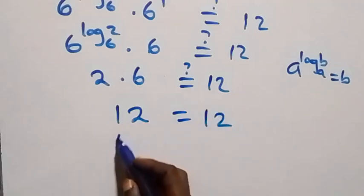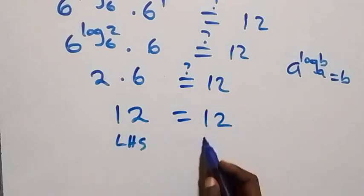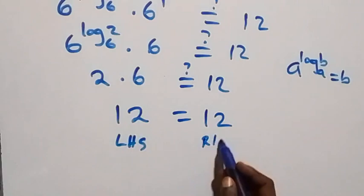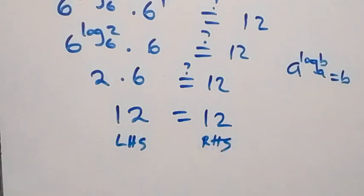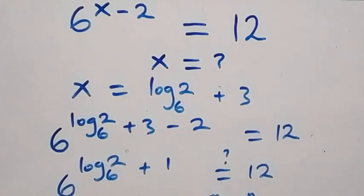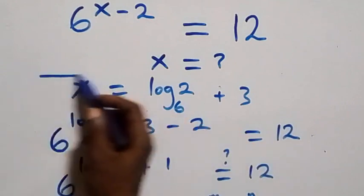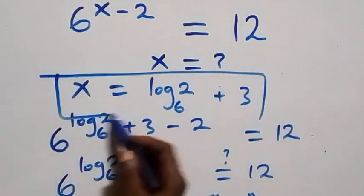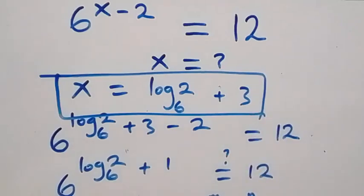Left-hand side equals right-hand side, so we conclude that x equals log 2 to base 6 plus 3 satisfies this given problem. Thank you for watching — don't forget to subscribe for more videos, turn on your notification bell, share this video, give a thumbs up, and put your comments. See you next class, bye for now.